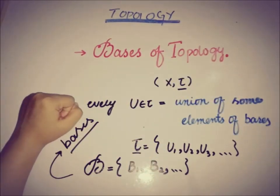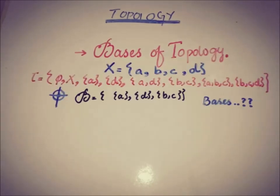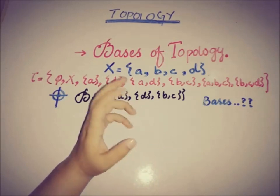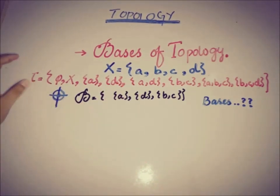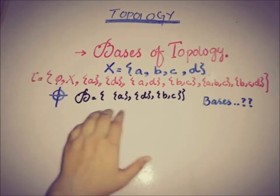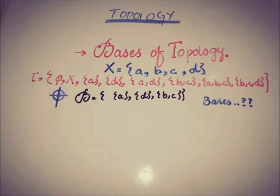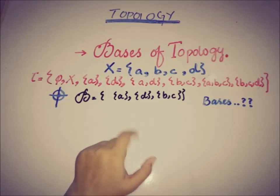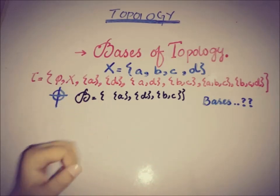Let's see an example to understand this more easily. X is a set containing four elements: a, b, c, d, and there is a topology tau. The target is: if the basis B is a set containing three subsets of X, is this set known to be a basis of the topology? We check if it satisfies the axiom.